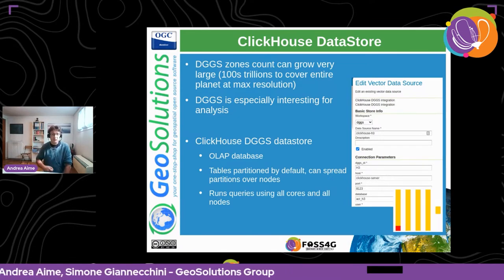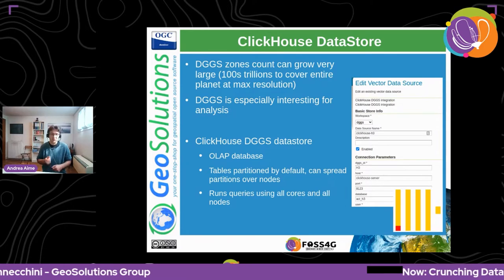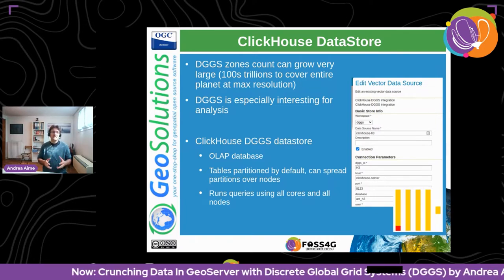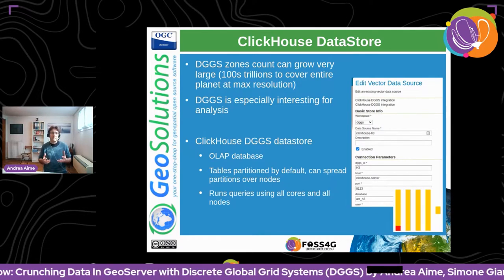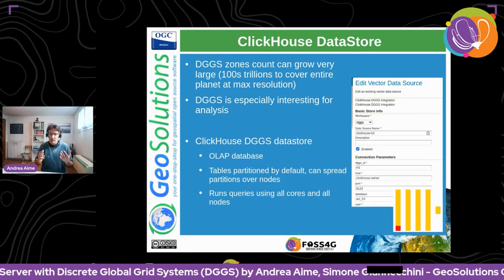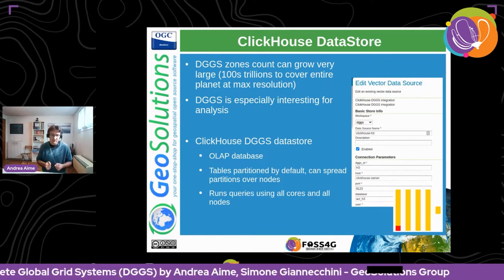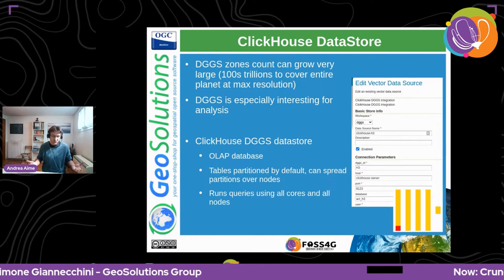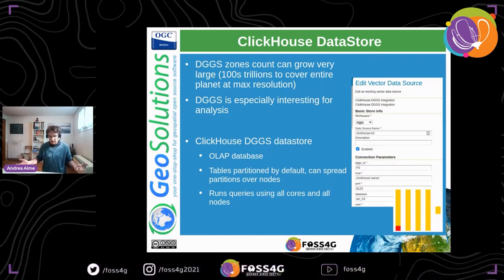To handle this kind of volume and get quick responses, we looked at an open source columnar database called ClickHouse. ClickHouse retains the familiar structure of a relational database — tables and columns — but tables are partitioned by default. Queries are automatically spread over partitions using all available cores, and if you have a cluster deployment, queries fan out across all nodes, so it can run very complicated queries very fast.